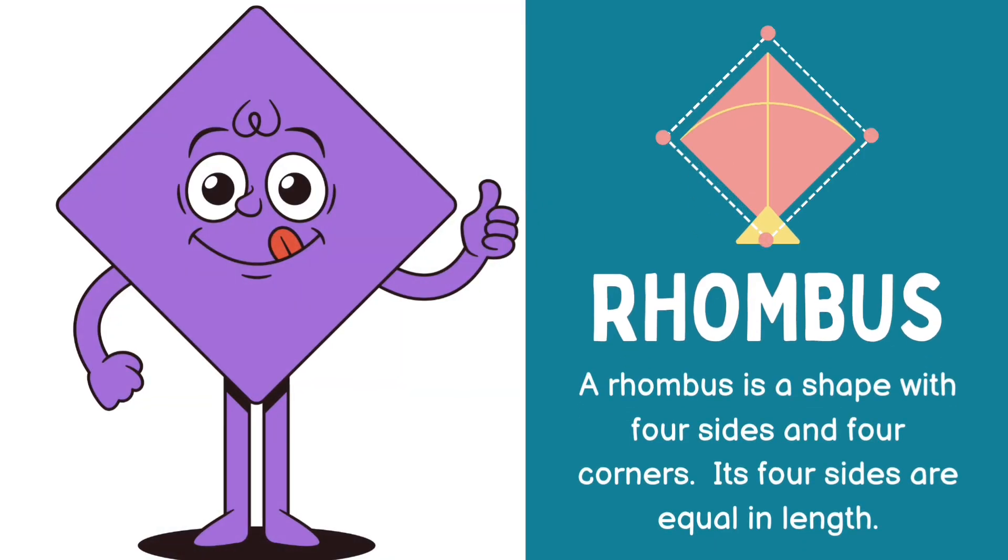Rhombus: A shape with four sides and four corners. Its four sides are equal in lengths.